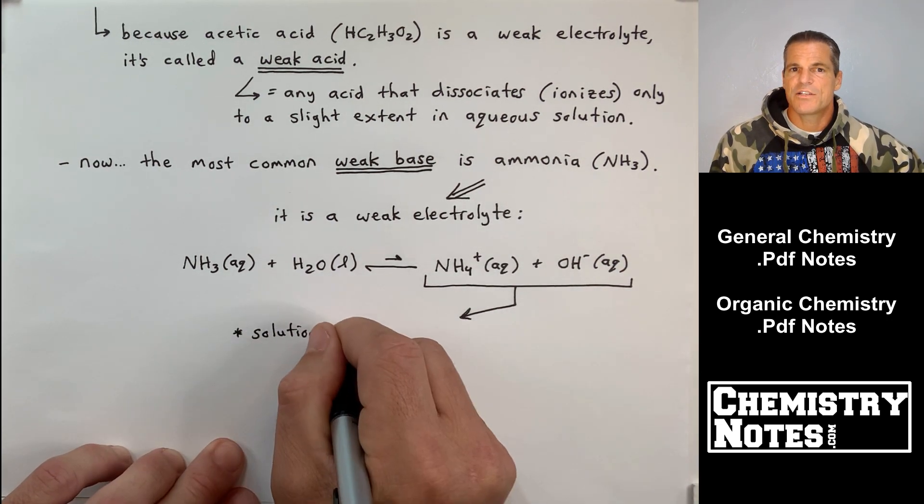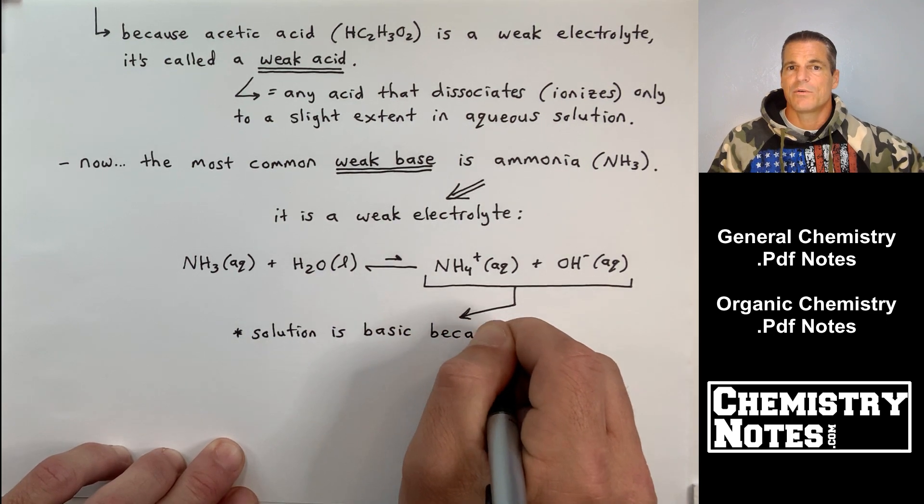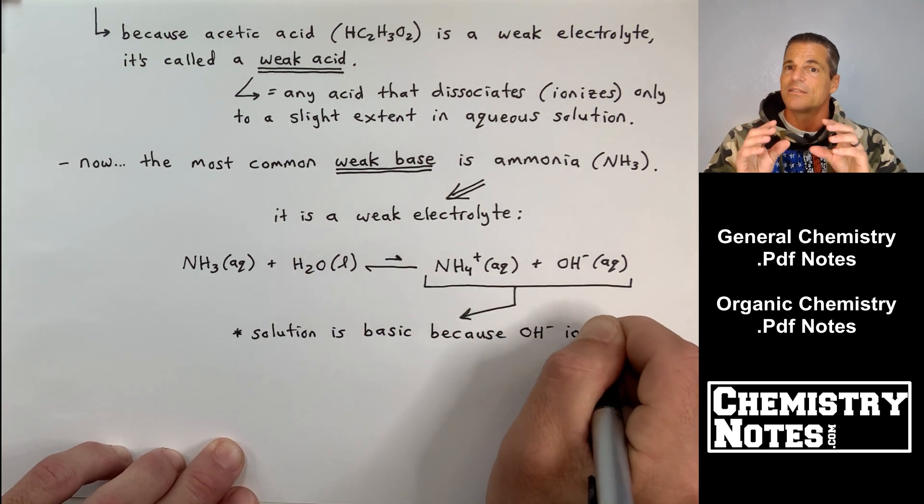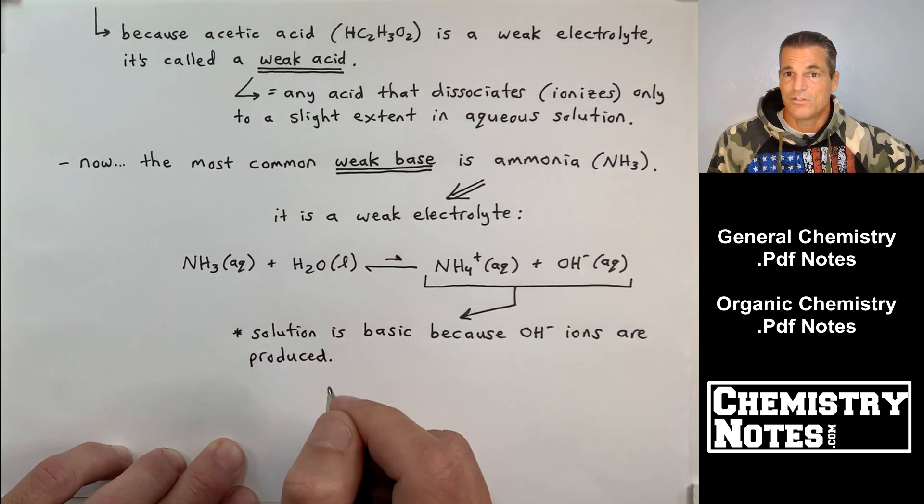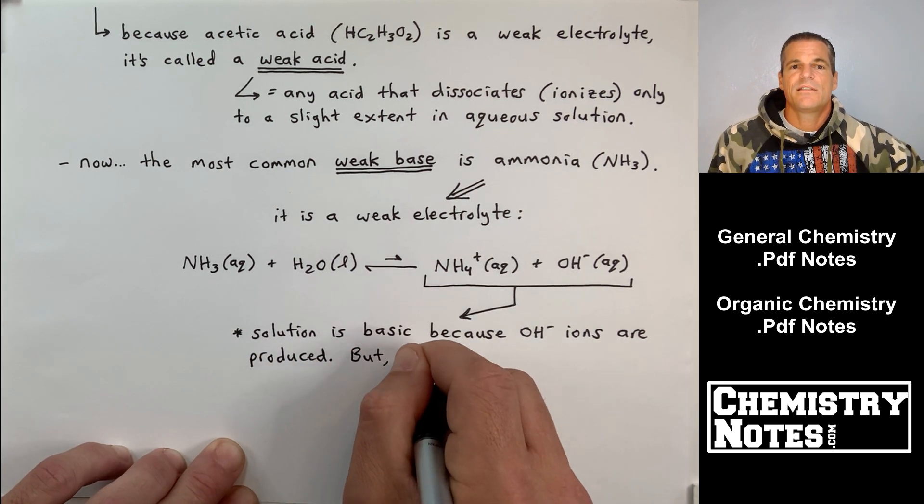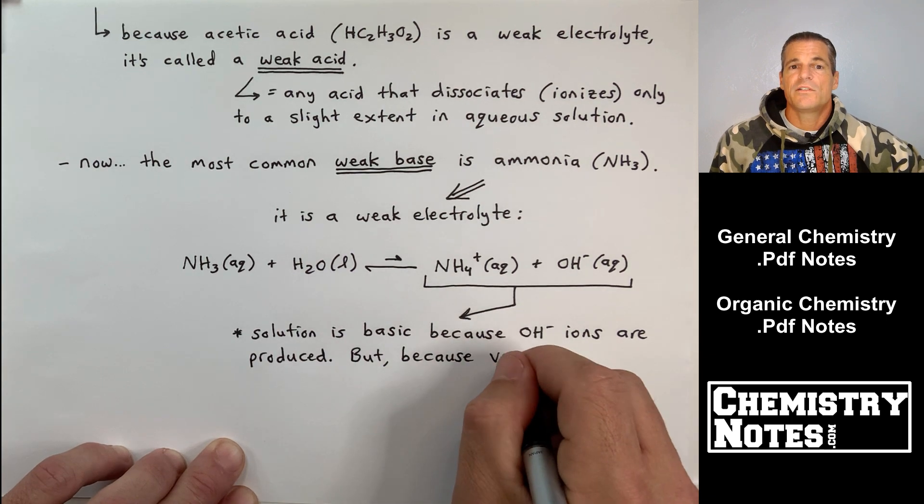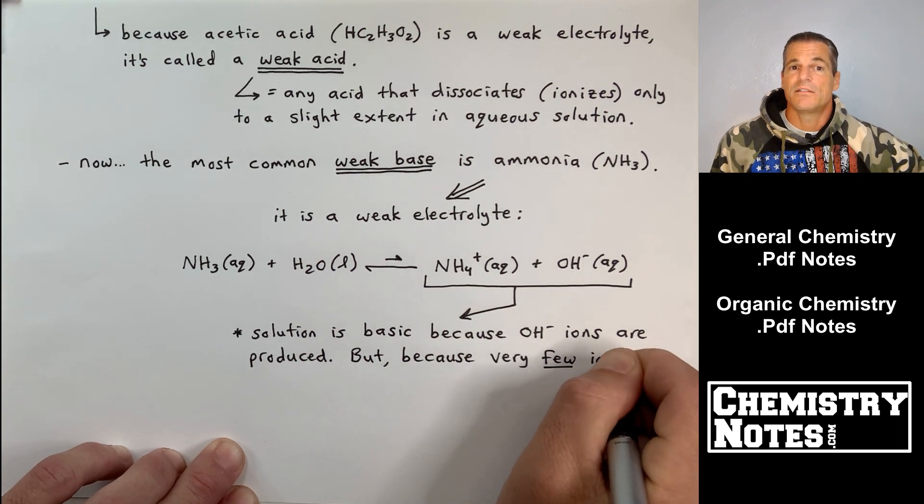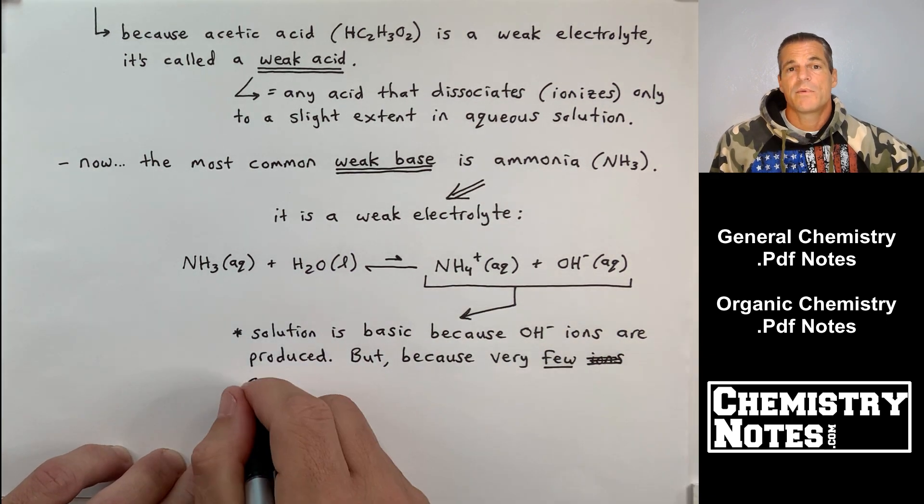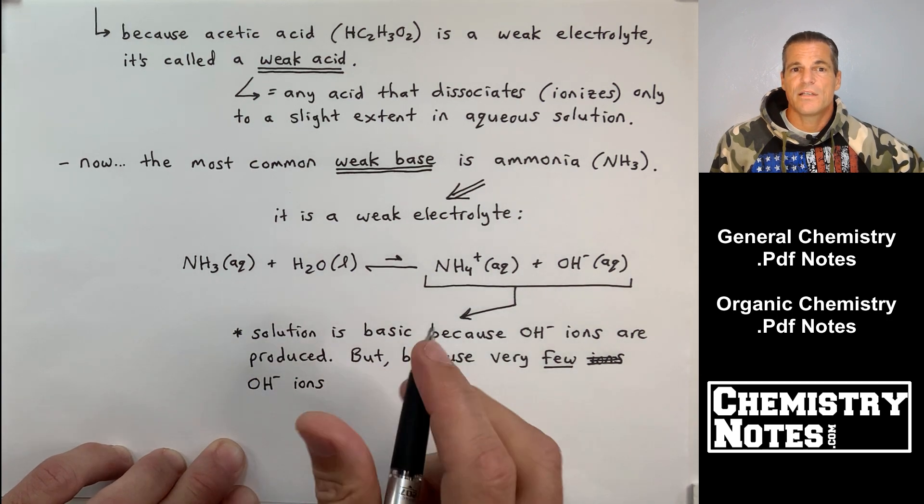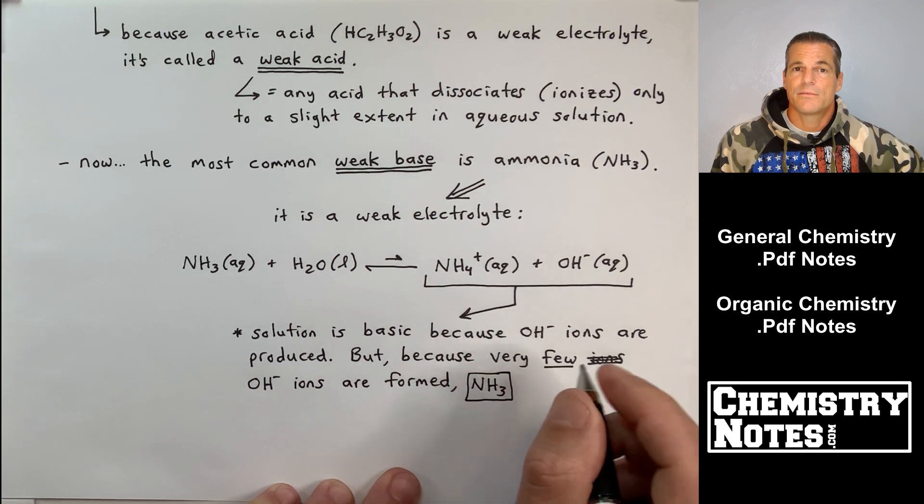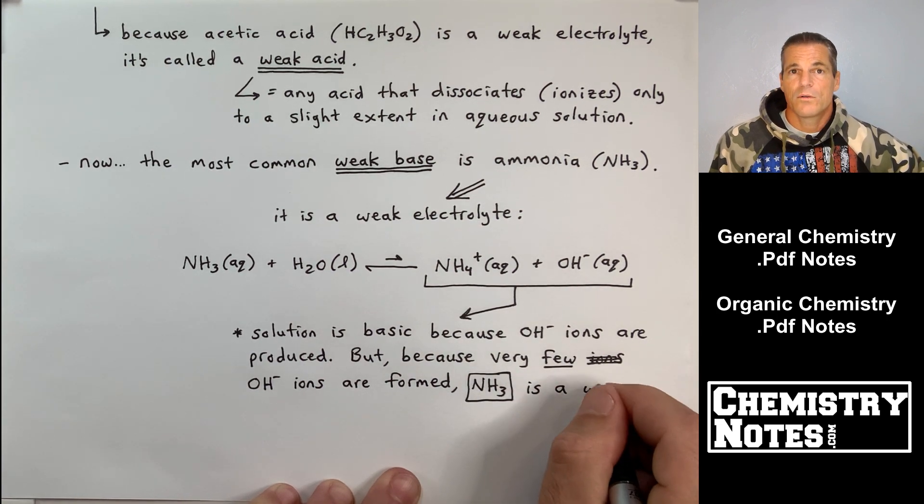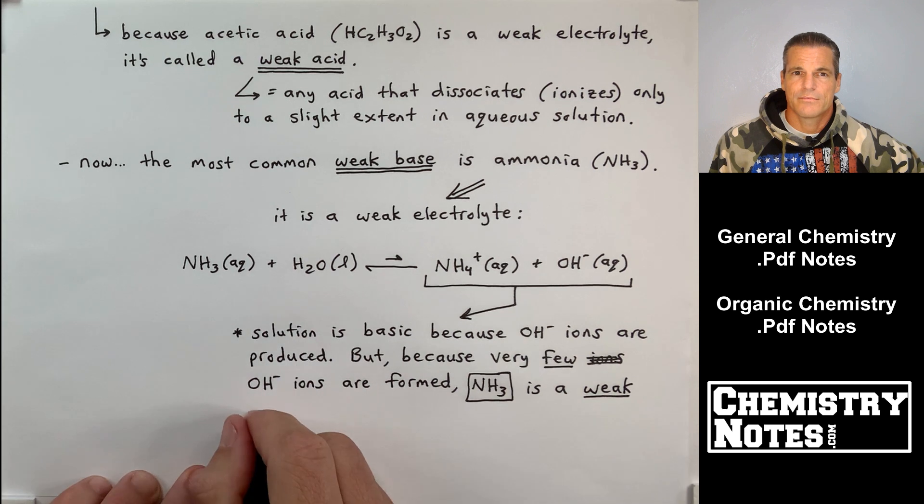But look at the reaction arrow. It's a double-headed arrow. And it looks like equilibrium, or most of it, lies to the left as the reactants. And the reactant side has no ions. So it says here in that little star, solution is basic because OH- ions are produced. But because very few OH- ions are formed, NH3 is a weak base. And therefore, a weak electrolyte.